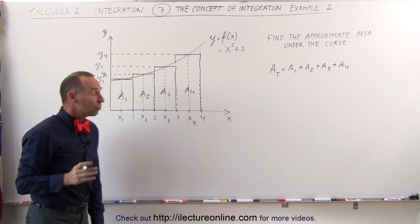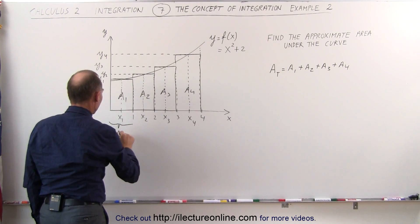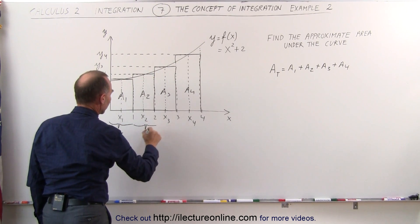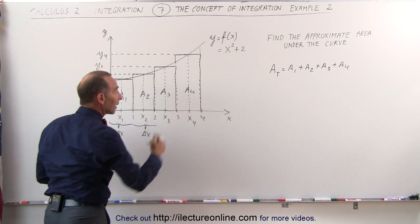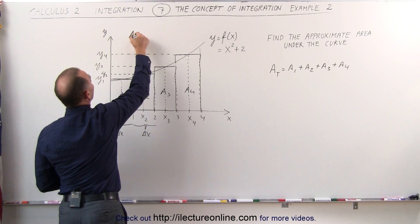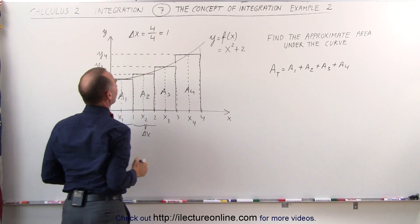The width of each rectangle, let's call it delta x again. So this here, this is the width, let's call it delta x. And since the total width here is 4, and there's 4 rectangles, we can say that delta x is equal to the total width divided by the number of rectangles, which is equal to 1.